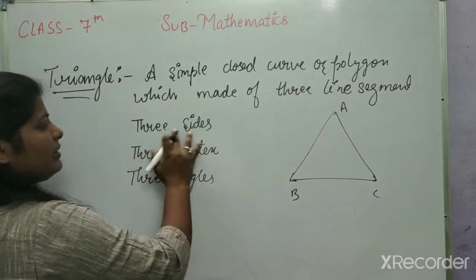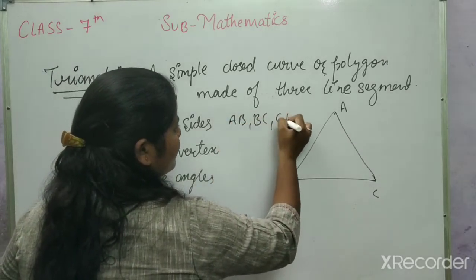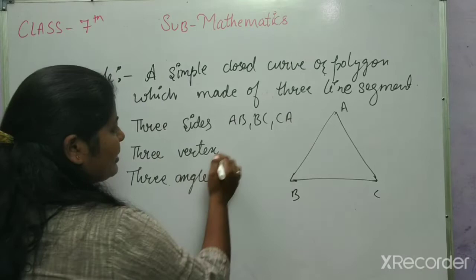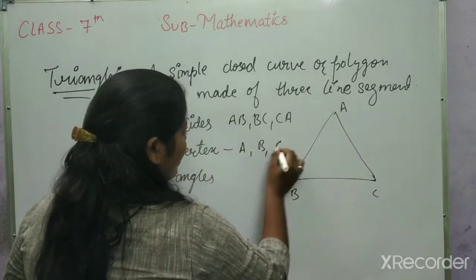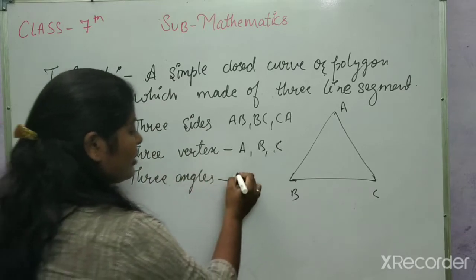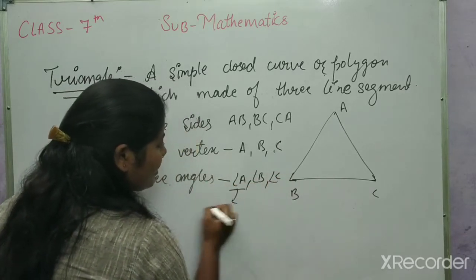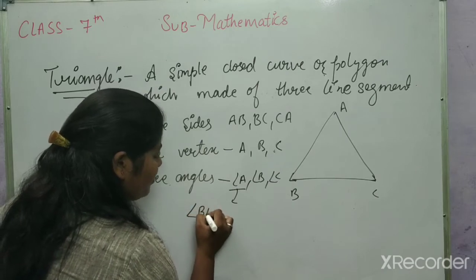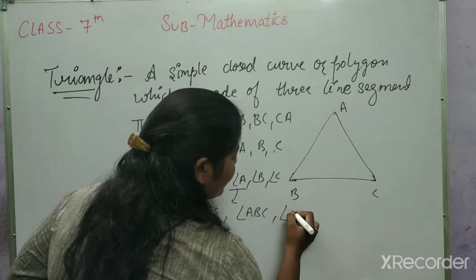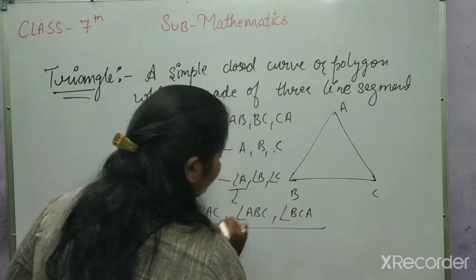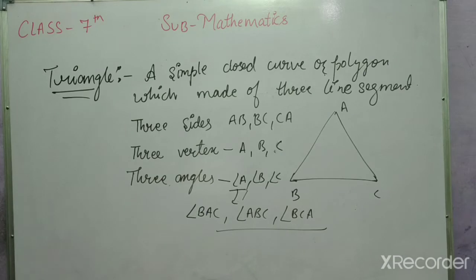In this diagram, three sides are AB, BC, CA, and three vertices are A, B, C. Three angles are angle A, angle B, angle C. These angles can be written as angle BAC, angle ABC, and angle BCA. Now pause the video and note down the definition.